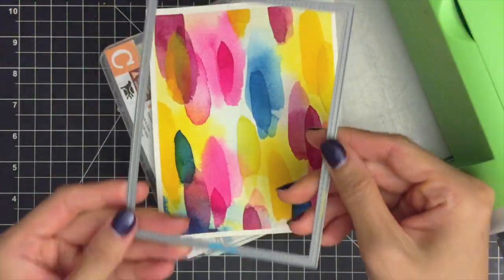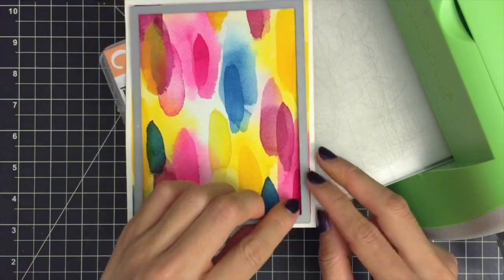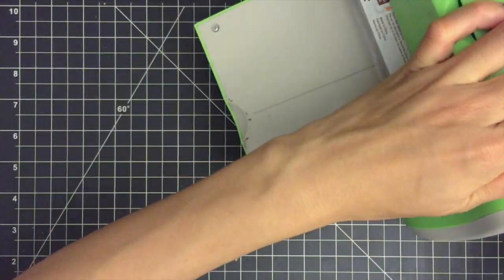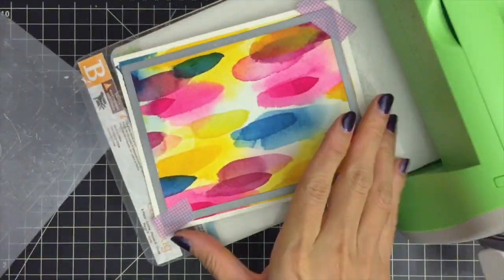I pull out the stitched rectangle frame die and secure it on my watercolor piece using washi tape. Then I'll be running it through my cardboard icon machine.